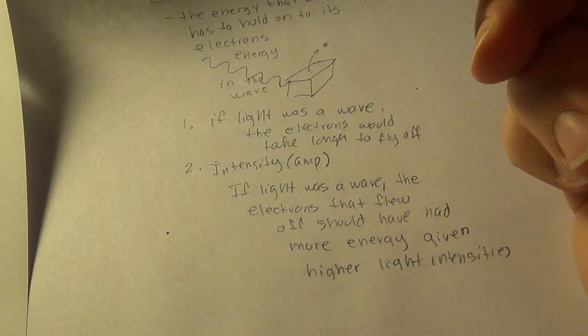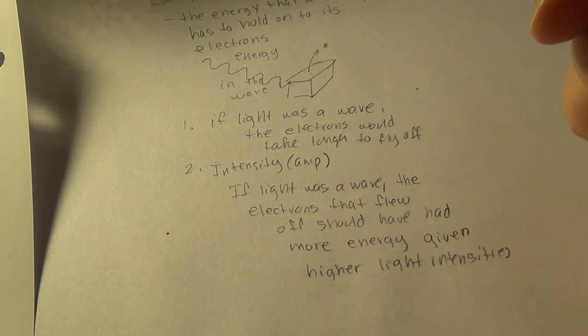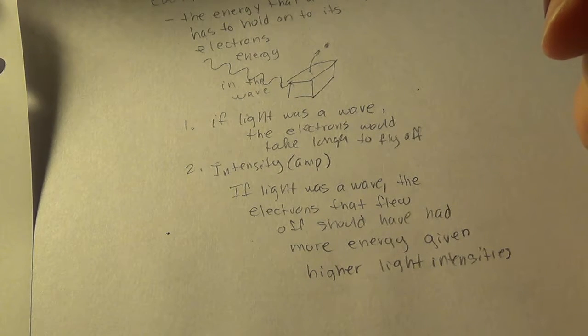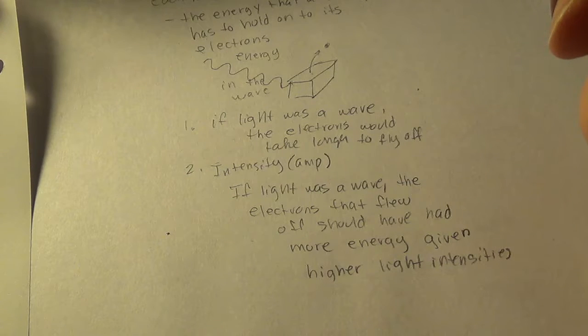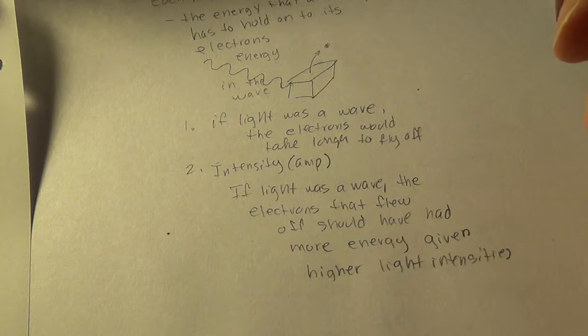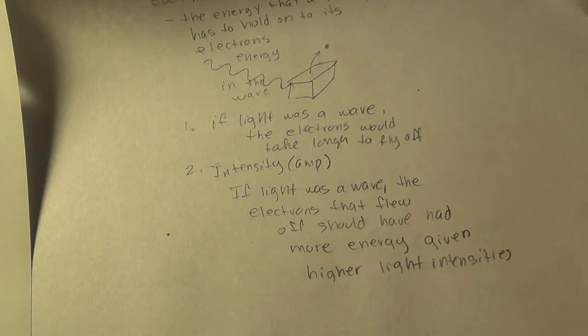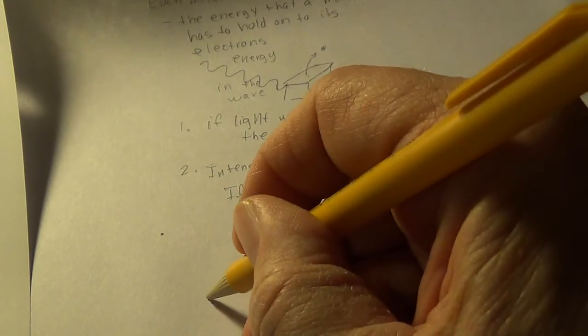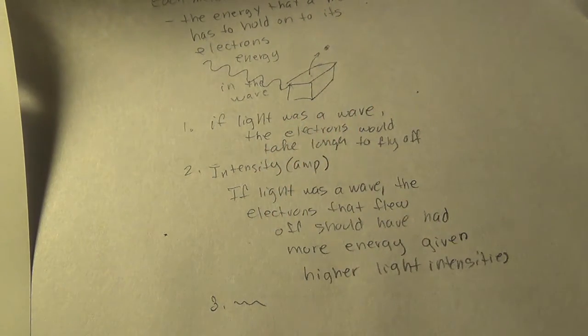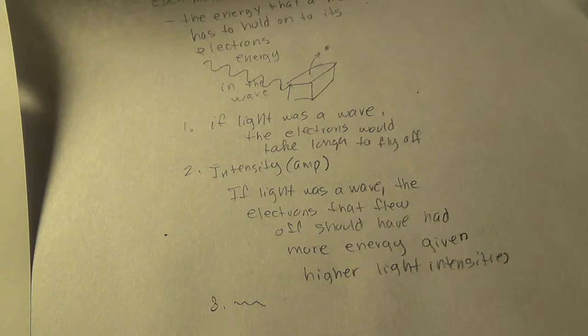If light used was below this frequency, the electrons would not be emitted. So, each metal has a certain frequency threshold in other words. So, like a cutoff frequency. Below that frequency, electrons would not fly off. So, that is not consistent again. So, I won't write anything about number three. But, that is not consistent again with the idea that light is a wave. And number four, the maximum kinetic energy of an emitted electron was directly proportional to the frequency of the light used.